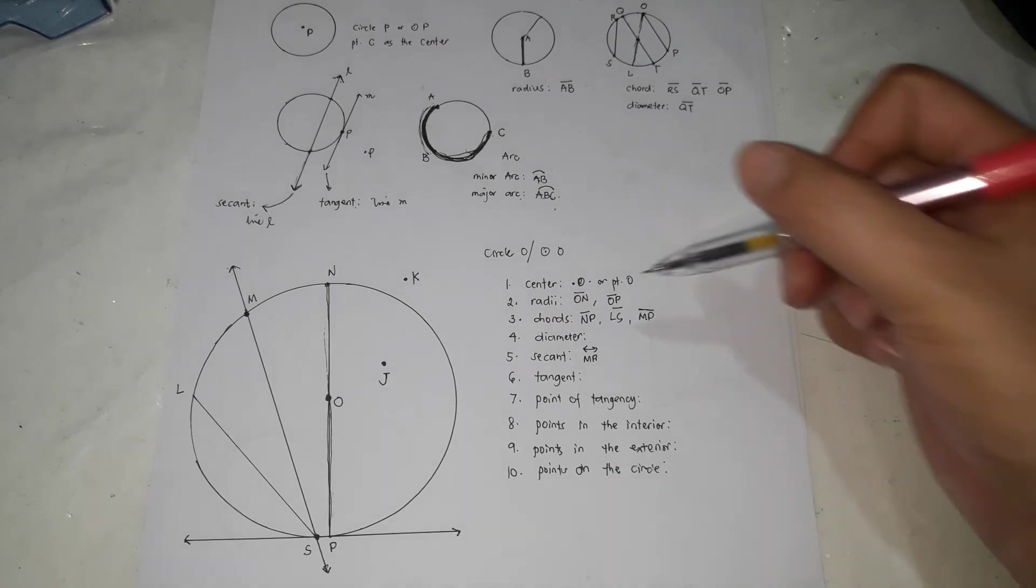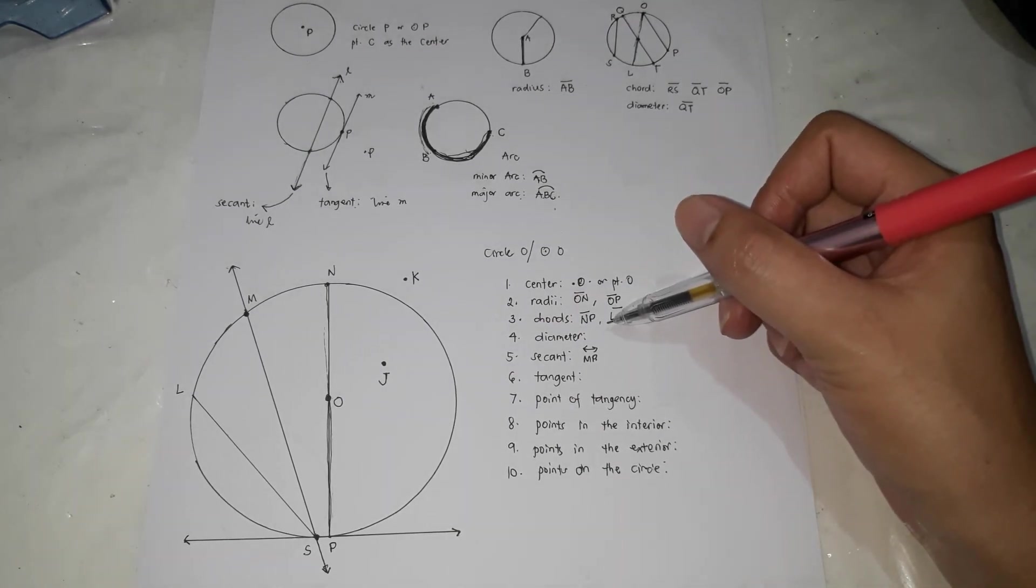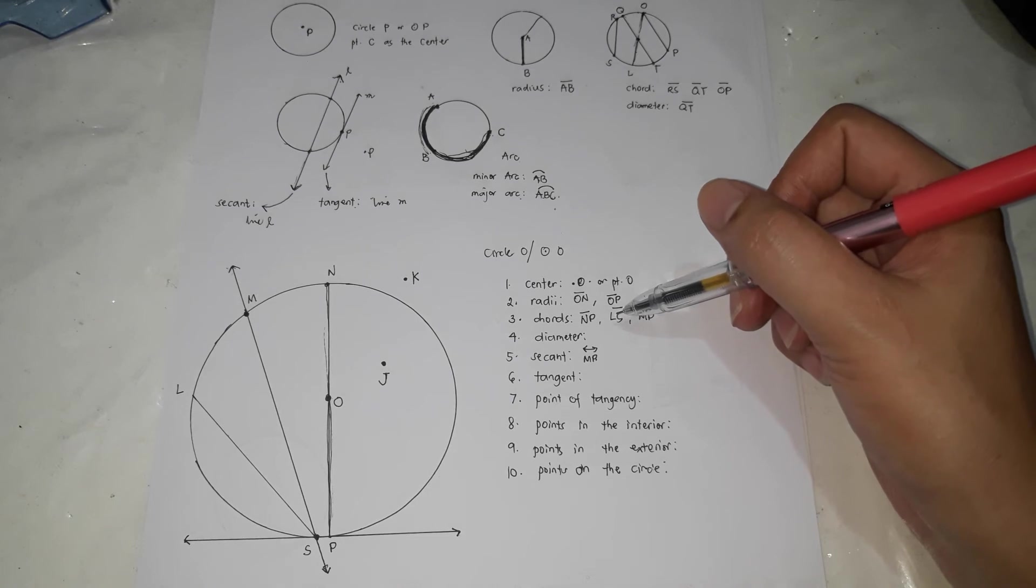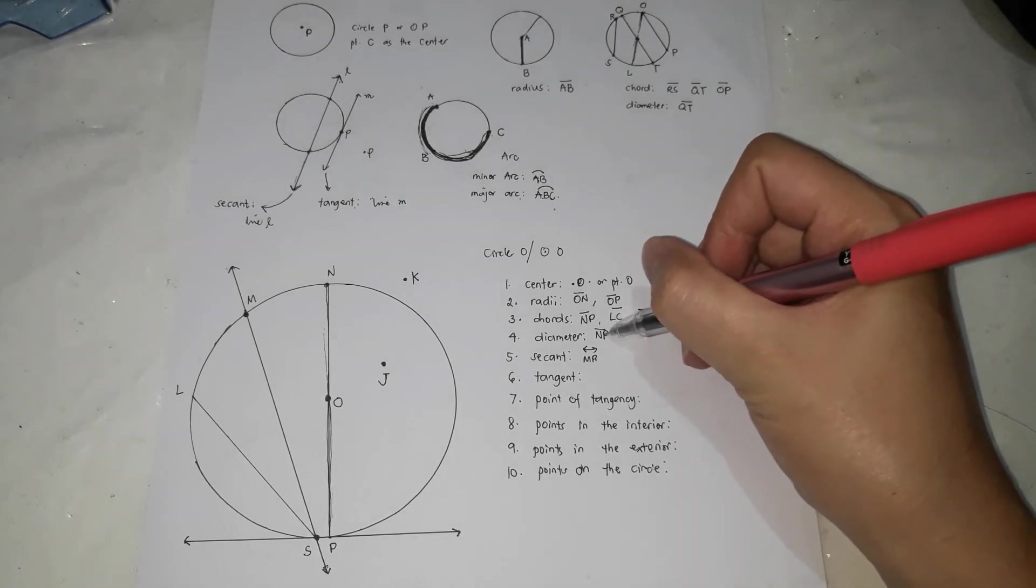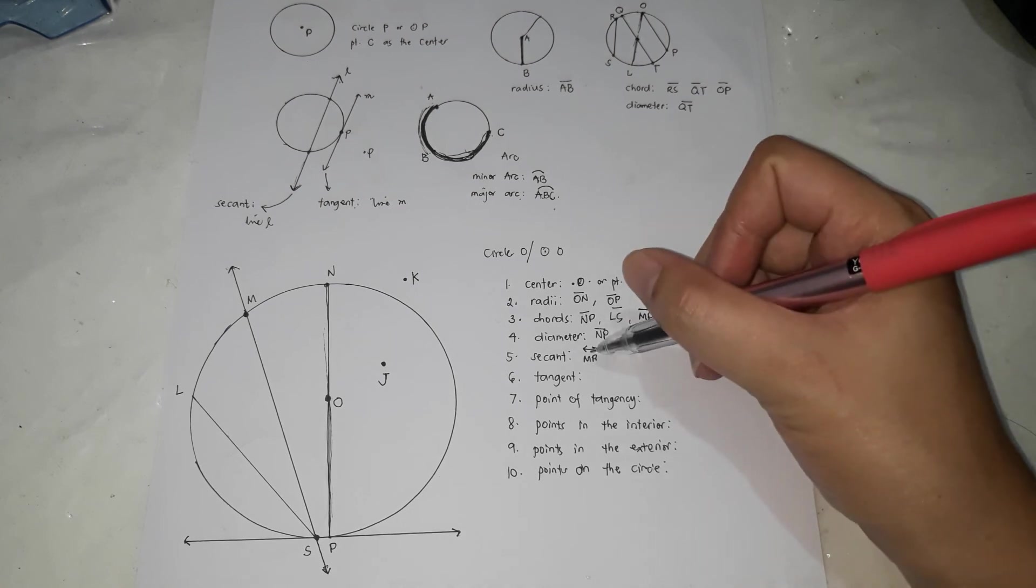Next, we'll proceed with number four, the diameter. Diameter is a chord that passes through the center. There's only one which is called line segment MP. We answered already the secant. It is a line that passes through two points on the circle.